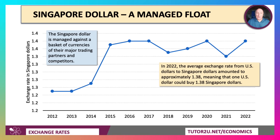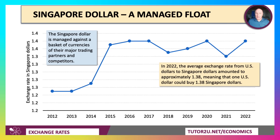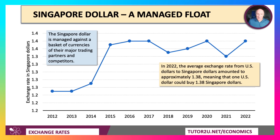The Singapore dollar is a managed floating currency — it's managed against a basket of currencies, not just one currency. This is the exchange rate from the Singapore dollar to the US dollar, and they're trying to keep it within a fairly narrow range — a managed float.